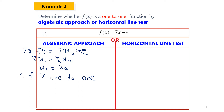Now we will try to use the horizontal line test like in the previous slide. In order to do this, we need to sketch the graph of the function first. Since 7x + 9 is a linear function, we know it has a positive gradient of 7 and a y-intercept at 9. So the graph will look like this — this is our f(x).